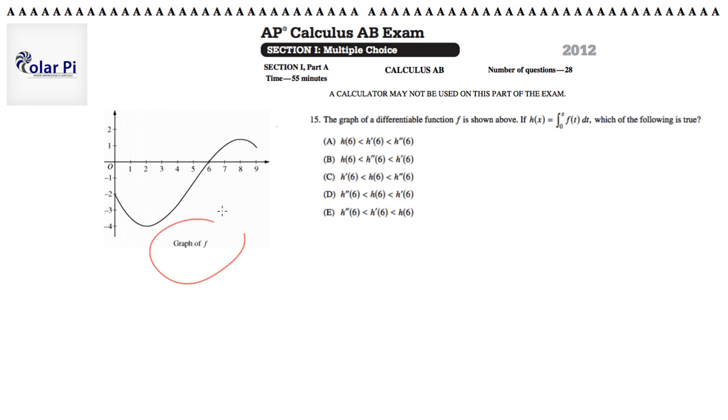Pay attention to what's given in these graphs, okay? And then it says, if h(x) is equal to this guy, which is the integral from 0 to x of f(t)dt, then which of the following is true?